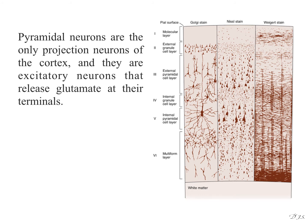Pyramidal neurons are the only projection neurons of the cortex, and they are excitatory neurons that release glutamate at their terminals.